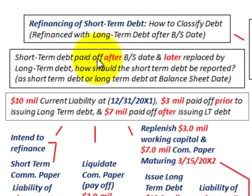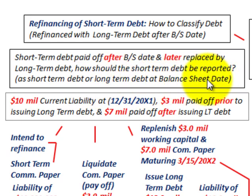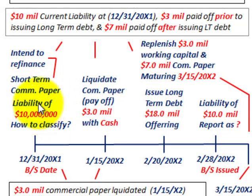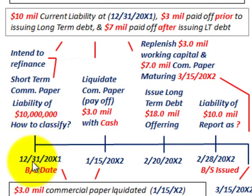Now, short-term debt paid off after the balance sheet date and later replaced by long-term debt — how should the short-term debt be reported? As short-term debt or long-term debt on our balance sheet date? We're going to be looking at a timeline example. We have some short-term commercial paper, a current liability of $10 million, sitting on our balance sheet at the cutoff date of 12-31-20X1.